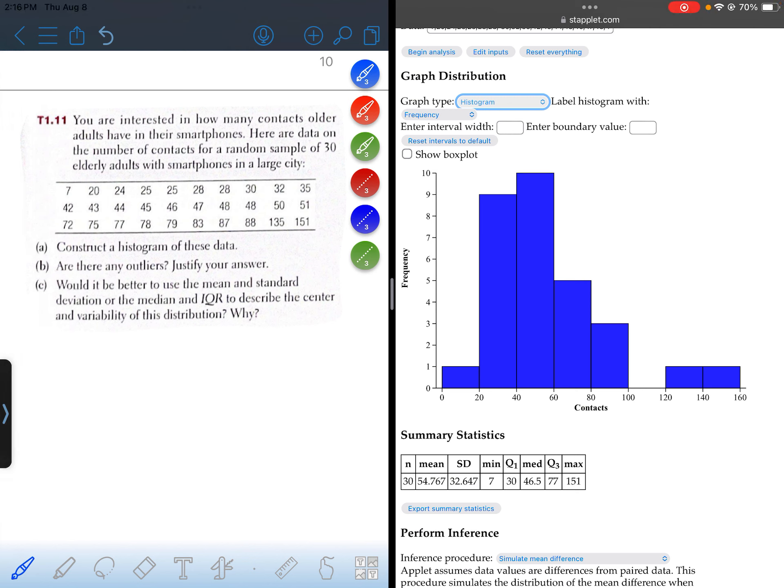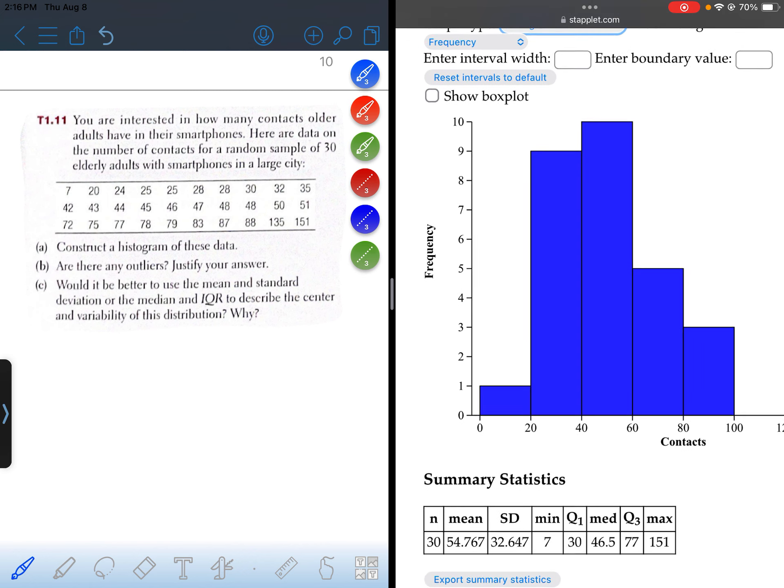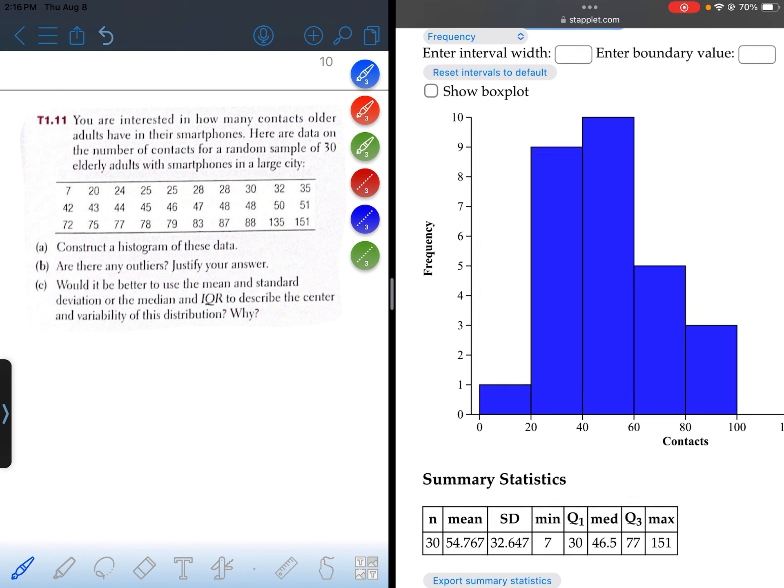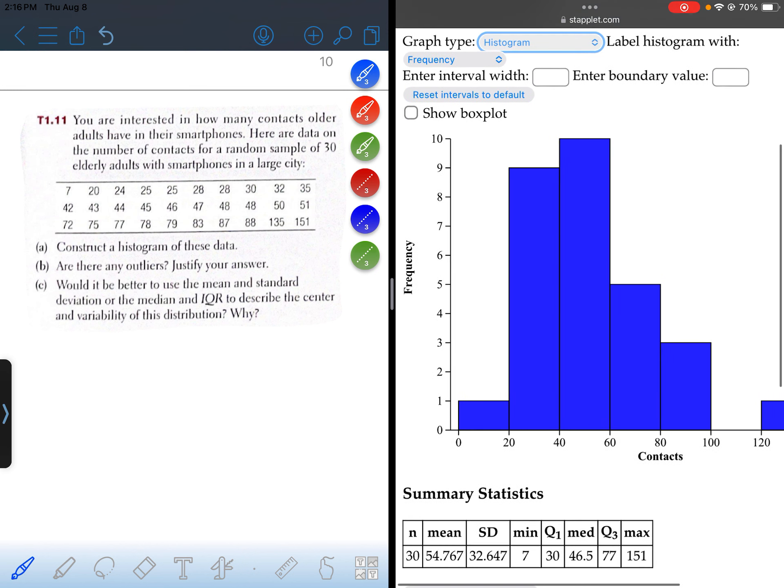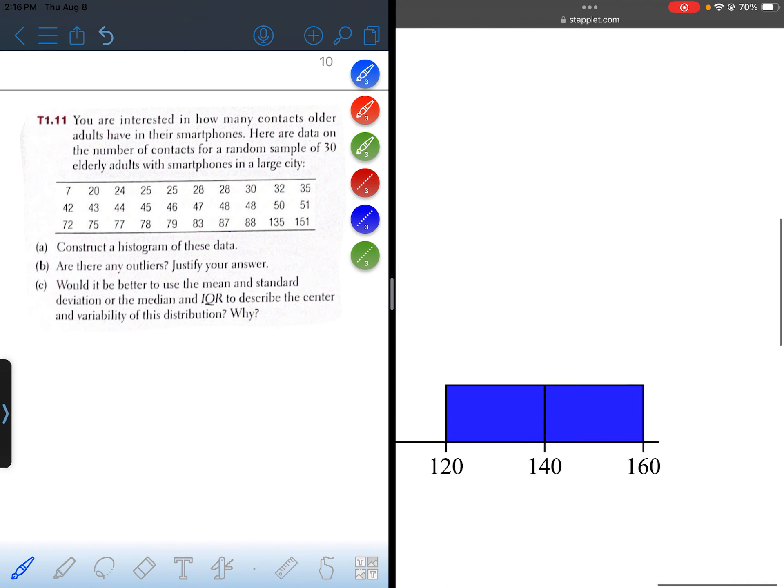Okay, the vertical axis has the frequency. So basically there's only one adult who has less than 20 contacts in their phone. It looks like there's 10 elderly adults that have between 40 and 60 contacts, and then there's one person that has between 140 and 160 contacts in their phone.